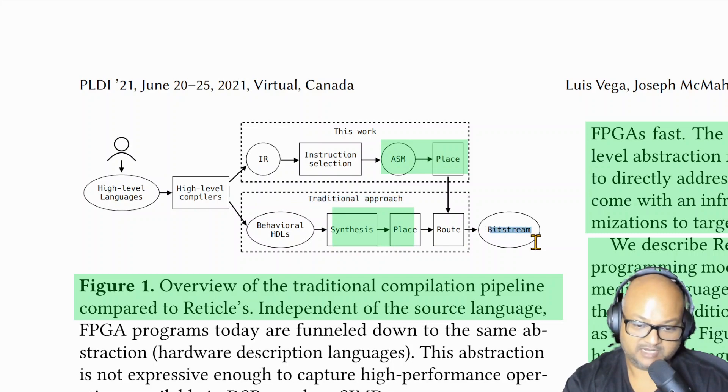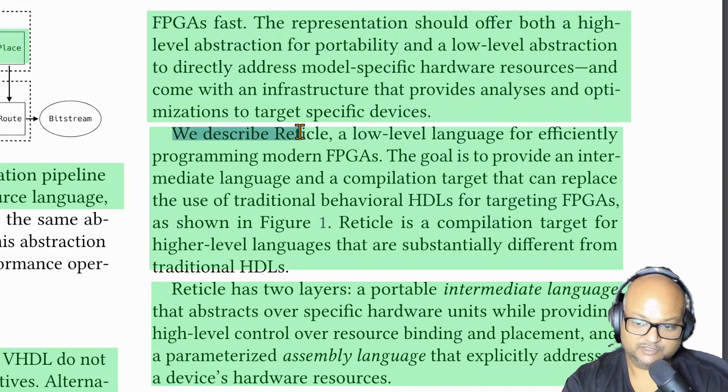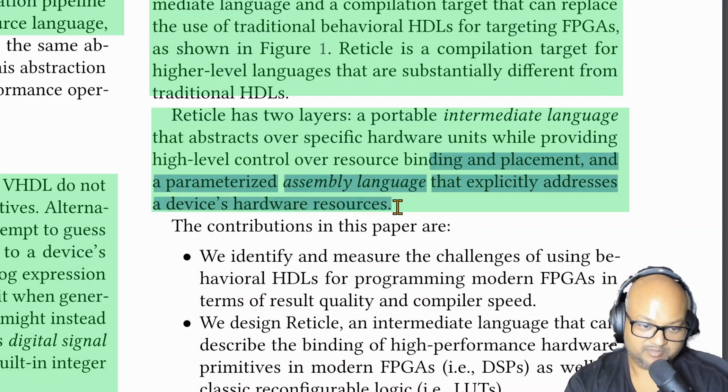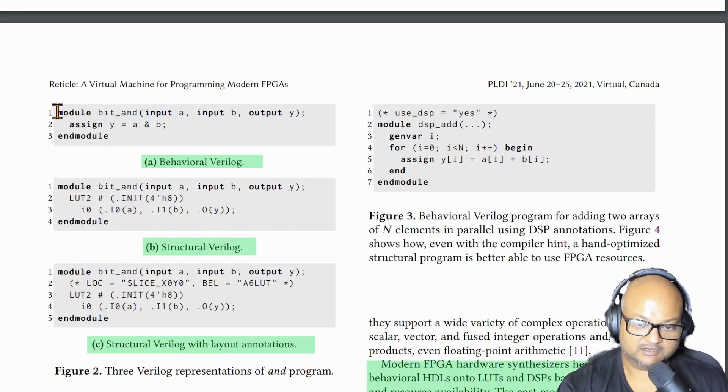What the authors here are proposing is a new intermediate representation which would be a target for this high level compiler, and this intermediate representation is designed in a way that addresses some of these issues that we just described. They call this virtual machine or intermediate representation Reticle, and it is going to be a compilation target for these high level languages. Reticle is designed to have two layers of abstraction: there is a portable higher level intermediate language which abstracts over hardware, and then a lower level what they call an assembly language that has a much closer mapping to the specific capabilities of the FPGA that it is targeting and is then able to make use of those hardware resources.